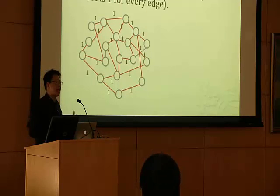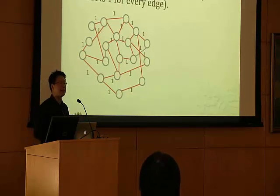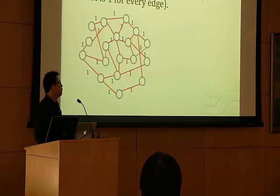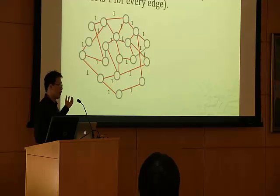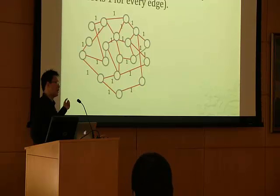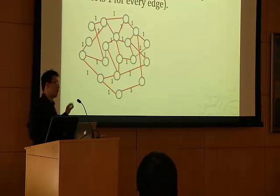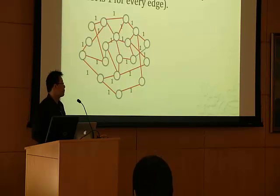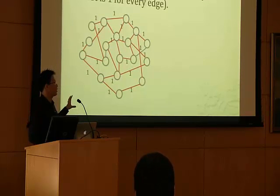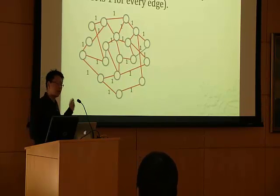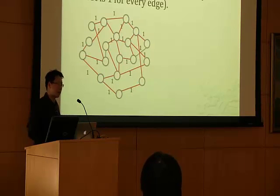The way costs are assigned is by using domain knowledge. For instance, if this is a biological network, biologists sit and label the costs of the edges one by one. For simplicity, let us just assume that all edge costs are uniformly one.